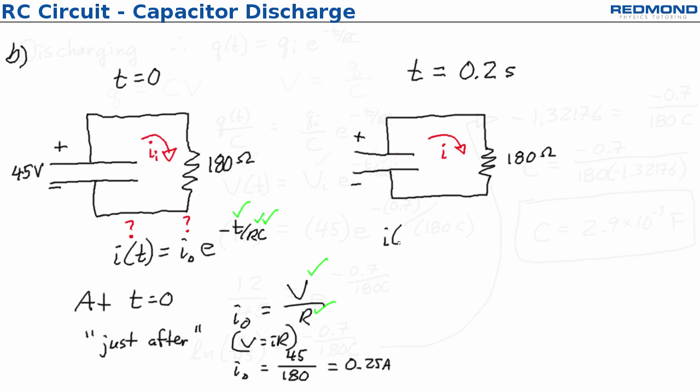Then to find the current at t equals 0.2 seconds I just substitute this in because the initial current is 0.25 amp then I have e to the negative 0.2 divided by 180 ohms times the capacitance which was 2.9 times 10 to the negative 3 farads and when I include extra sig figs and solve for this I get 0.17 amps.